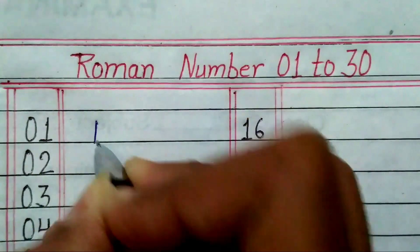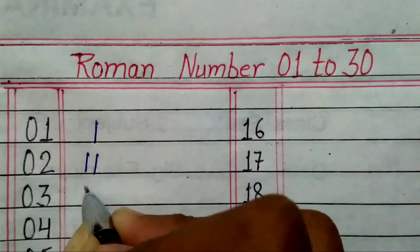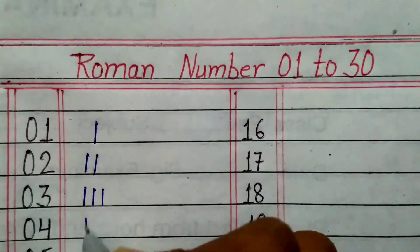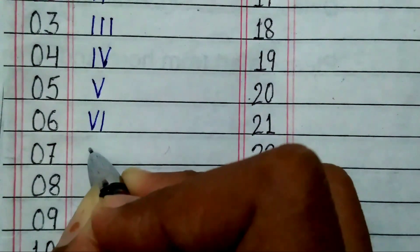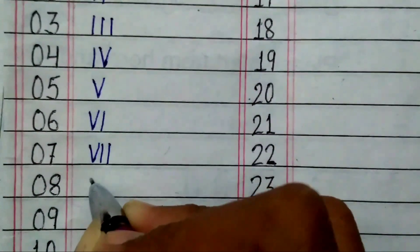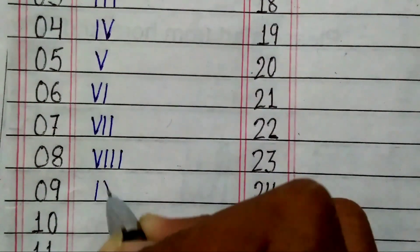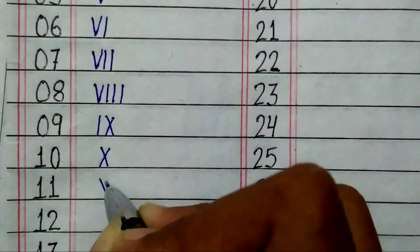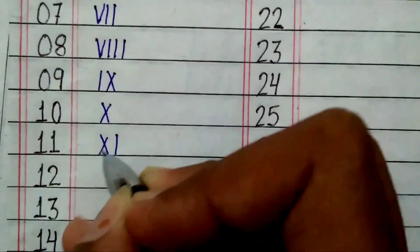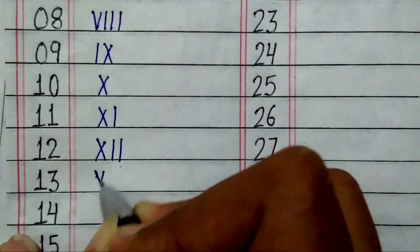1 = I, 2 = II, 3 = III, 4 = IV, 5 = V, 6 = VI, 7 = VII, 8 = VIII, 9 = IX, 10 = X, 11 = XI, 12 = XII, 13 = XIII.